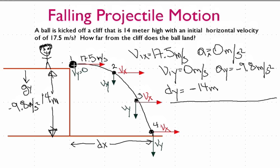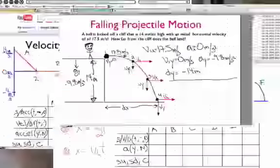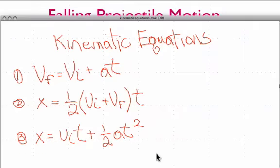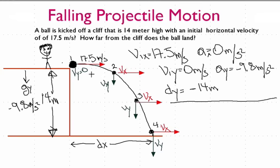What we want to know is the time it takes for the ball to fall. Once we know the time, we can get the distance, because distance equals velocity times time. The time for the ball to travel in the x direction and the y direction are the same. So this is a two-step problem: first find the time, then find the distance.